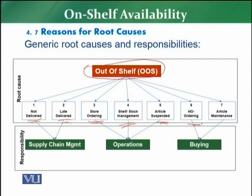The sixth root cause is head office ordering. If a particular article is ordered through the buyer from the head office and the buyer was not able to order it, or there was a delay in ordering, or the buyer has not ordered at all — this will result in an out-of-shelf situation.